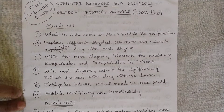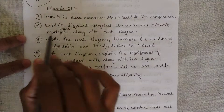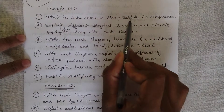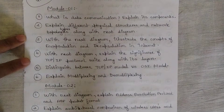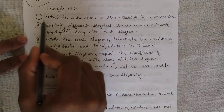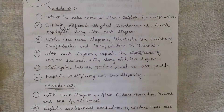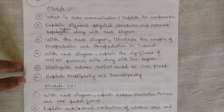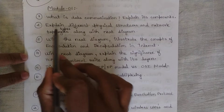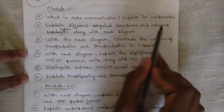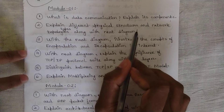Let us start with Module 1. The first question which is fixed is: 'What is data communication? Explain its components.' I predict this would be the 1(a) question in the final paper — data communication and its components. My prediction may or may not be correct, but this is very important. The second question is: 'Explain different physical structures and network types along with neat diagrams.'